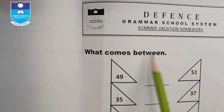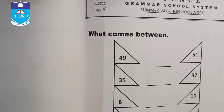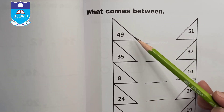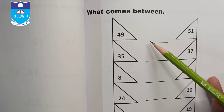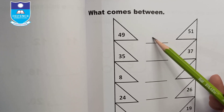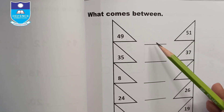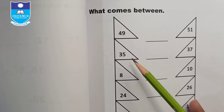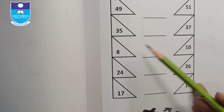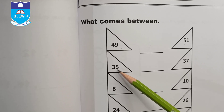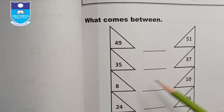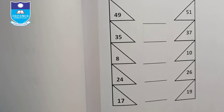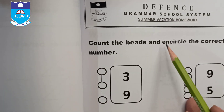What comes between? For example, 49, _, 51 — the answer is 50, which comes between 49 and 51. Similarly, fill in the numbers that come between: 35 and 37, 8 and 10, 24 and 26, 17 and 19.